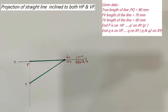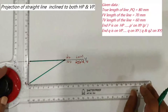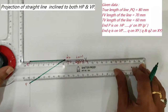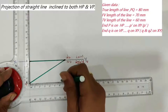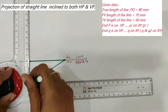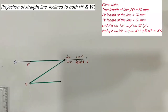The top view length is 60mm, and we know that the initial front view and top view lines are parallel to the XY line. So at P, with the given top view length of 60mm, draw a line parallel to the XY line. Name this point Q1.